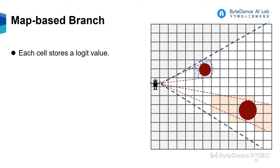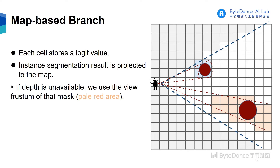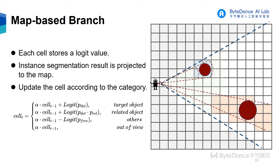The probability map is similar to the occupancy map widely used in robot navigation. Each cell in the probability map stores a logit value. At each time step, we project the result of instance segmentation onto that map. If depth is available, we use the view frustum of that mask. Then we update the logit value on the cell according to the projected object. The history logit is multiplied by a decay factor, which serves as a forgetting mechanism.